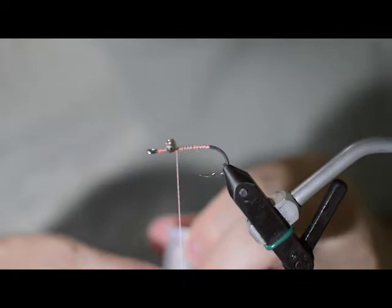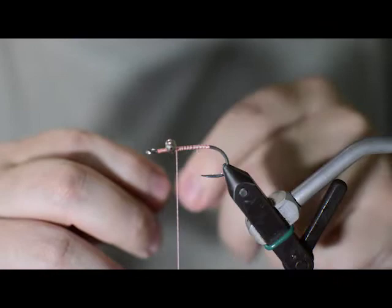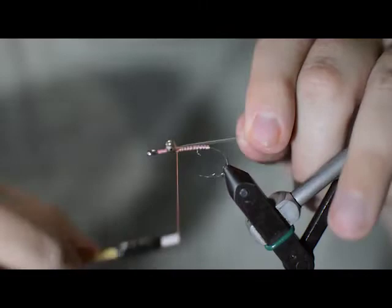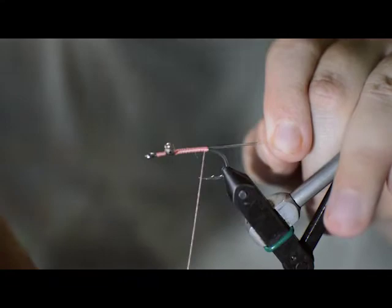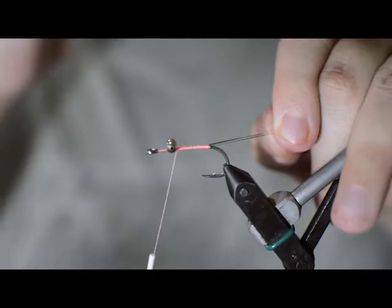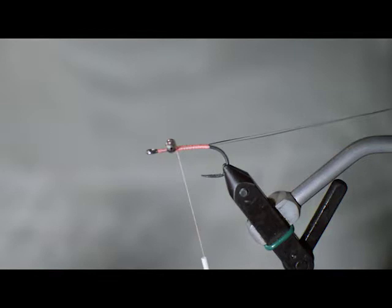So our next material is going to be a vinyl rib, D-rib, any type of just vinyl rib will work. It basically has two rounded sides and a flat side. This happens to be the clear color. So since we're tying this in a shrimp pink today, the clear actually lets the pink of our flashaboo shine through really nicely as opposed to getting this material in pink. So we're going to tie it right back until about right before the bend of our hook here.